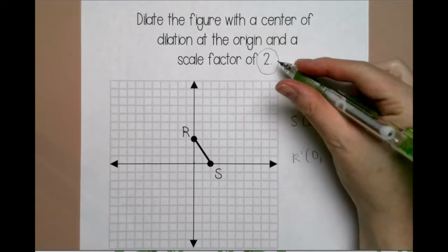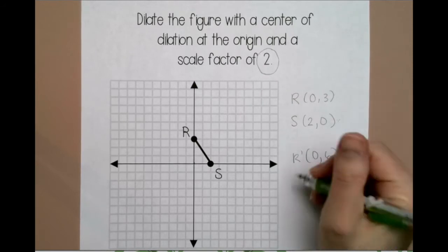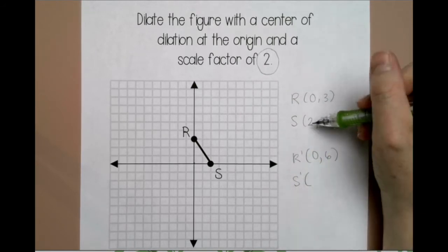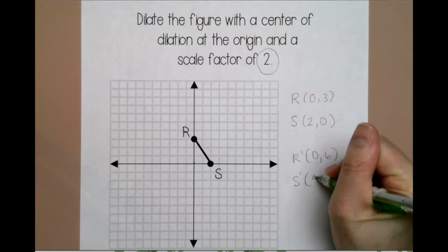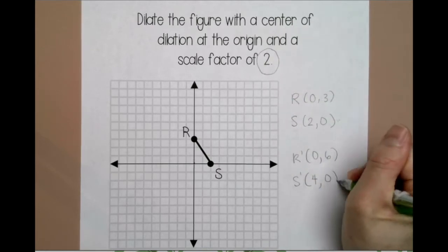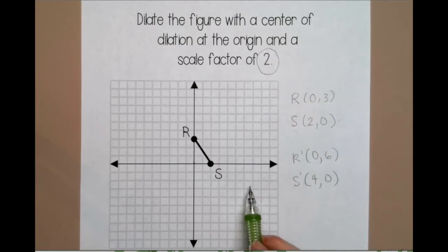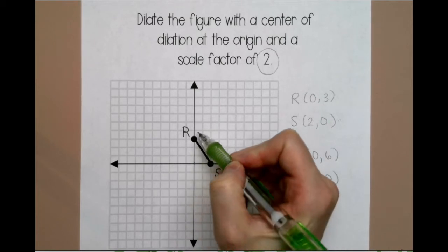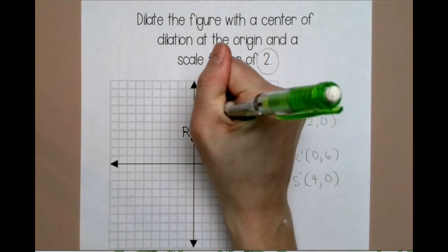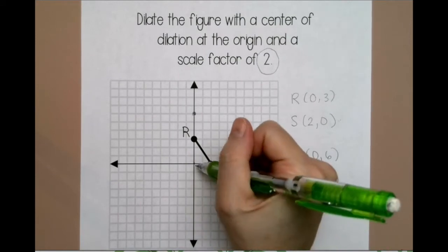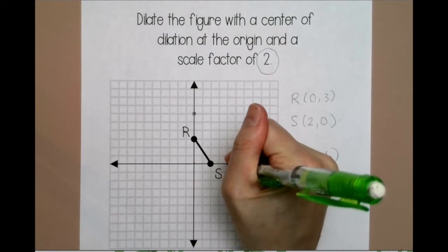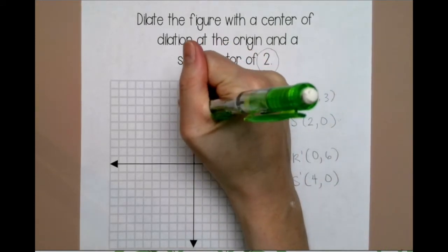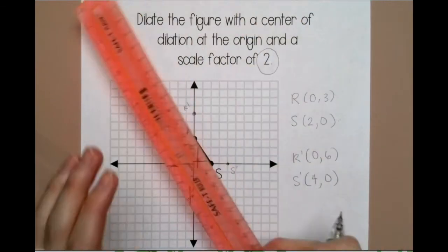And 3 times 2, which is 6. For S prime, I'm going to multiply 2 times 2, which is 4, and 0 times 2, which is 0. And then you want to plot your new points, so 0, 6, and then 4, 0. I'm going to use a ruler to connect.